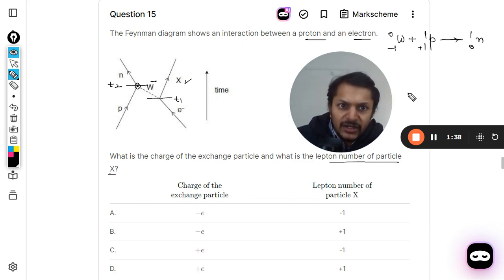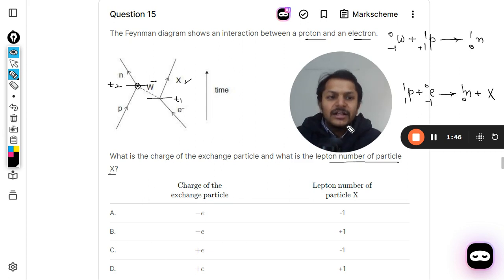The complete reaction by the way can be written as: proton plus electron gives rise to a neutron and X. But I'm not writing this thing, I'm directly going for this. But now when it comes to X, the lepton number of the particle—we would be needing this reaction now because we want to find the lepton number. Otherwise you can create a reaction here also, even that will be correct.